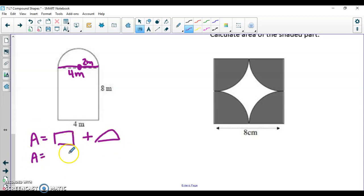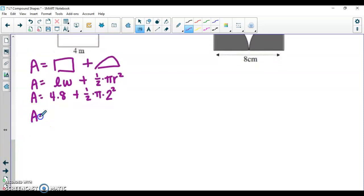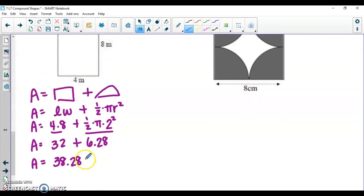For a rectangle, going to my formula sheet, my formula is LW. For a semicircle, this is half of a circle. So half of means to multiply, and area of a circle is pi r squared. So plugging in then, my length and my width are four times eight. Looking at the semicircle, I have one half times pi times my radius is two squared. So here, again, my two separate pieces. Four times eight is 32. Over here, I have 0.5 times 3.14 times two squared. That's going to give me 6.28. And when I add those together, 38.28. Label, everything is meters, so it's going to be meters squared.